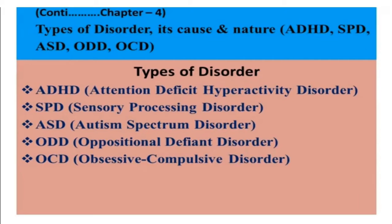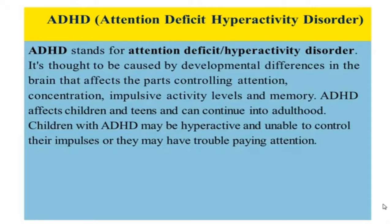Now we will see the full forms of these types of disorder. The first one is ADHD — Attention Deficit Hyperactivity Disorder. The next is SPD — Sensory Processing Disorder. ASD is Autism Spectrum Disorder. Next is ODD — Oppositional Defiant Disorder. And the last is OCD — Obsessive Compulsive Disorder.